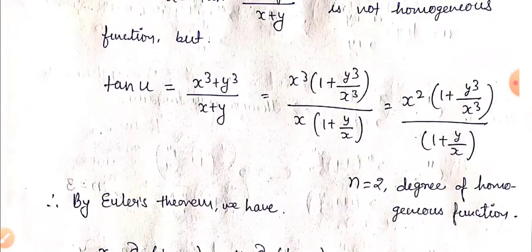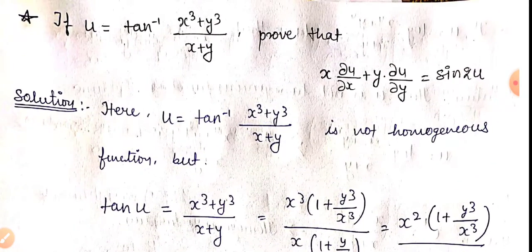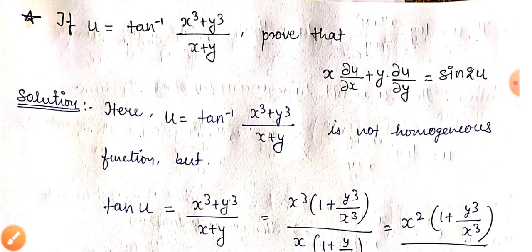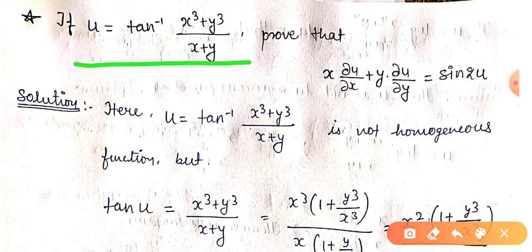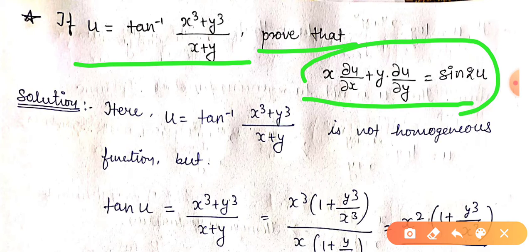Our given numerical is u equals tan inverse of (x³ + y³) divided by (x + y). We have to prove that x times ∂u/∂x plus y times ∂u/∂y is equal to sin(2u). It is just like a homogeneous function problem — similar to Euler's theorem.